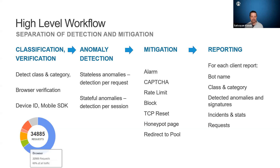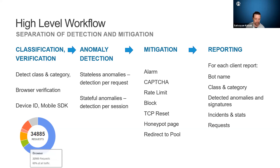Next we go to stateless anomaly detection per request and stateful anomaly detection per session, and that brings us to the mitigation. We have multiple mitigations we can do: we can just create a log alert — which we call alarm — we can send a CAPTCHA, or we can rate limit. It's pretty common to take some categories or particular user agents and rate limit them. Curl would be a good example — you may want to allow access to curl, but there should be no reason someone is running thousands of curl requests per second. We can also block, create a TCP reset, or send them to a honeypot page, which looks like a bad logon. This allows you to gather more information about what methods the malicious user is using while they waste more time and resources. And we can redirect to a specific pool.